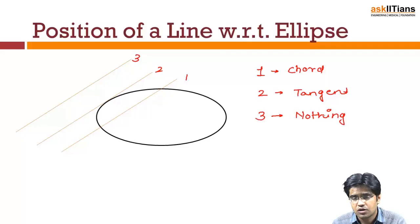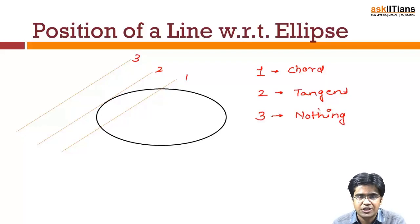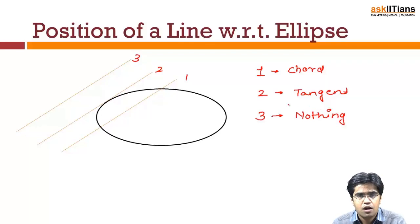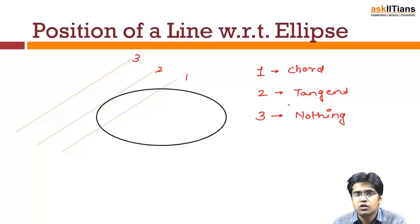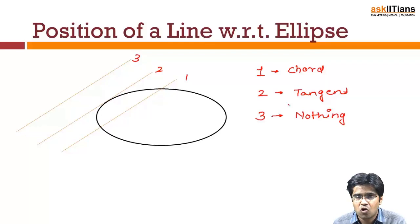Nothing means it's neither a chord nor a tangent — the line is not interacting with the curve. Now, how can we find out mathematically which of these three cases applies? How can we mathematically prove that a line is either a chord, a tangent, or not interacting?